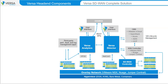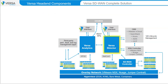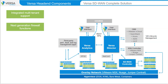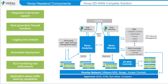The image illustrates a complete deployment scenario of the Versa Networks SD-WAN solution. Included in the deployment are the head-end components of Versa Director, Versa Analytics, and Versa Controller. The entire solution is implemented with three software packages: Versa Director, Versa Analytics, and Versa VOS or Versa Operating System. The VOS software package is common among all CPE devices and Versa Controller. Versa Director configures and deploys the controller and VOS CPE devices. This robust, simple, and secure SD-WAN implementation provides integrated multi-tenant support, next-generation firewall functions, logging and analysis, automated deployment, SLA monitoring and enforcement, and application-aware traffic steering capabilities.